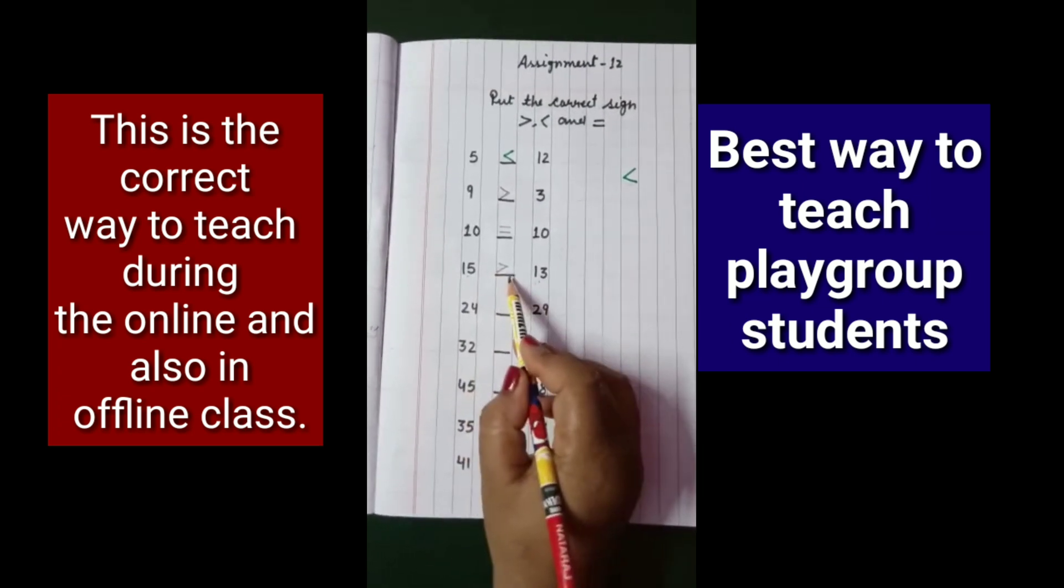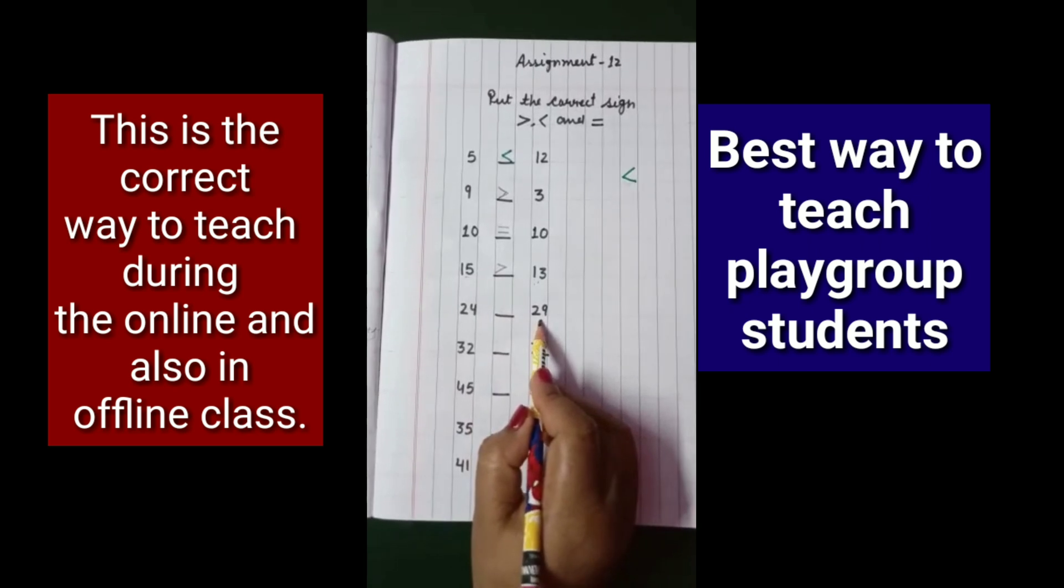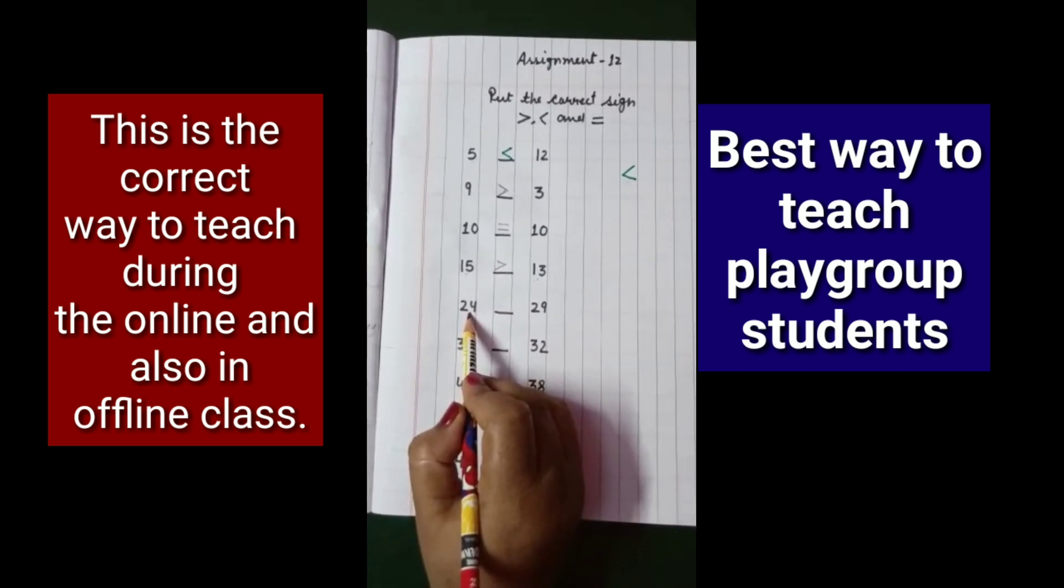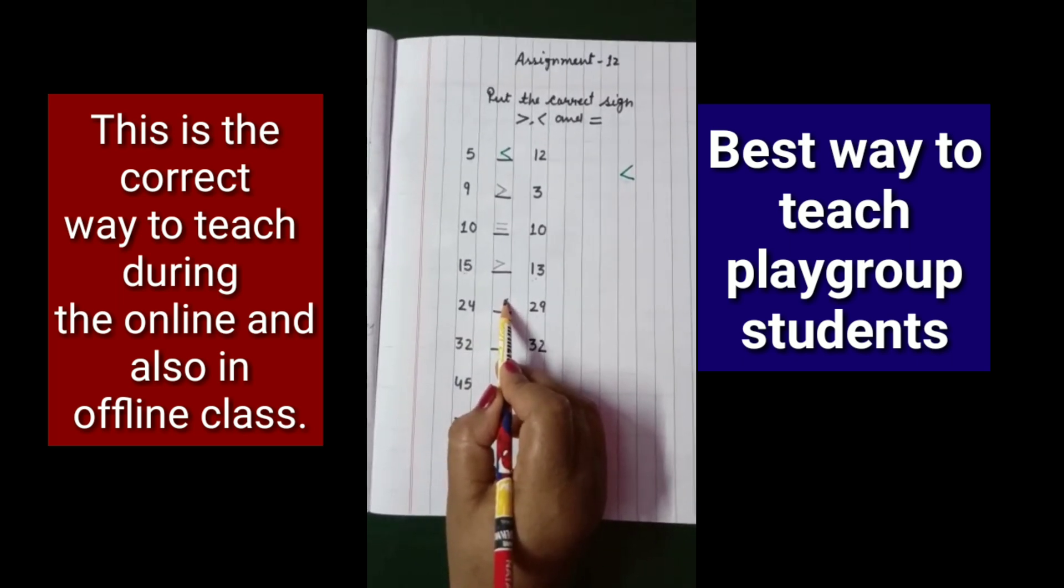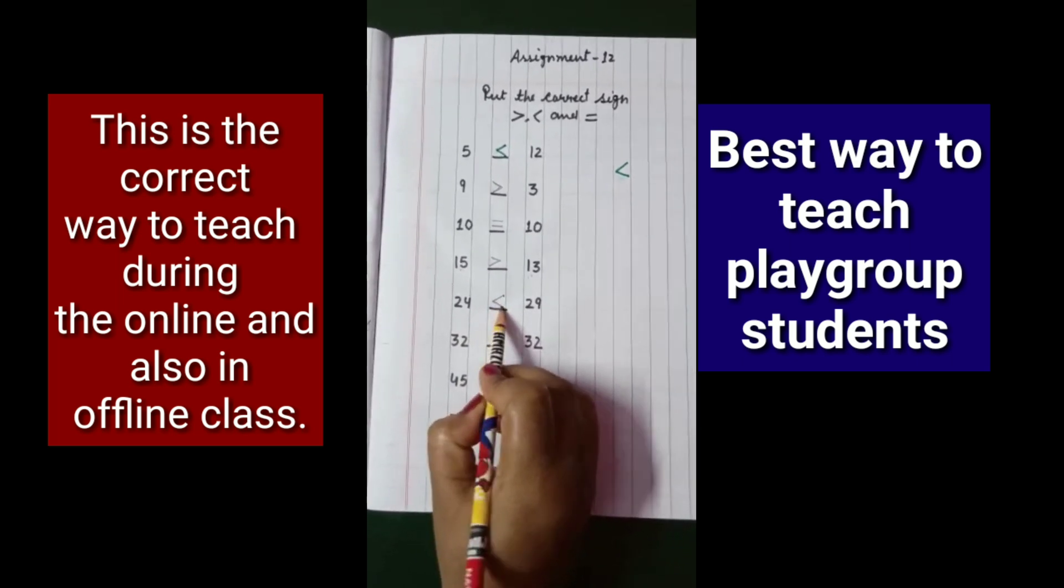Now it is 24 and 29. What is the smaller number here? 24. So the point will be towards the 24 and the mouth will open towards 29.